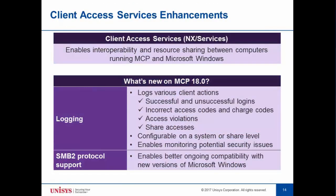Client Access Services has been around since the beginning of ClearPath and is used for interoperability between MCP and Microsoft Windows. To improve security, we've added logging capabilities in MCP 18.0: it can log logins both successful and unsuccessful, incorrect access codes or charge codes, access violations, and individual share accesses. You can configure logging at a system-wide level so all shares get logged, or configure only individual shares of concern. Another enhancement is support for the SMB2 protocol suite, focused on ensuring ongoing compatibility with Windows.